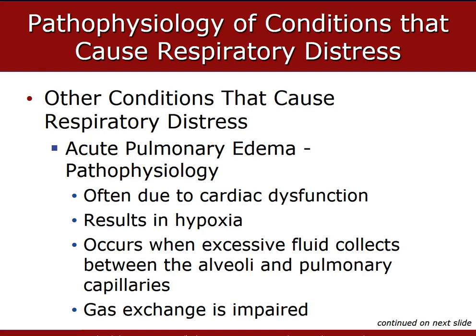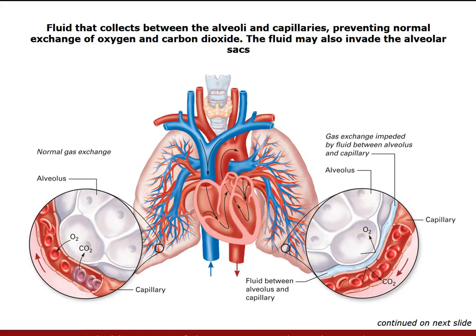Pulmonary edema is the presence of fluid in the space between the alveoli and the capillaries that surround them, interfering with gas exchange. Comparing to pneumonia, where pus builds up inside the air sac itself, pulmonary edema is slightly different — the fluid doesn't build up in the air sac. It builds up in the space between the capillary and the air sacs, which has a similar obstruction of gas exchange. You still can't exchange gas — it ricochets back because you can't exchange gas through fluid.